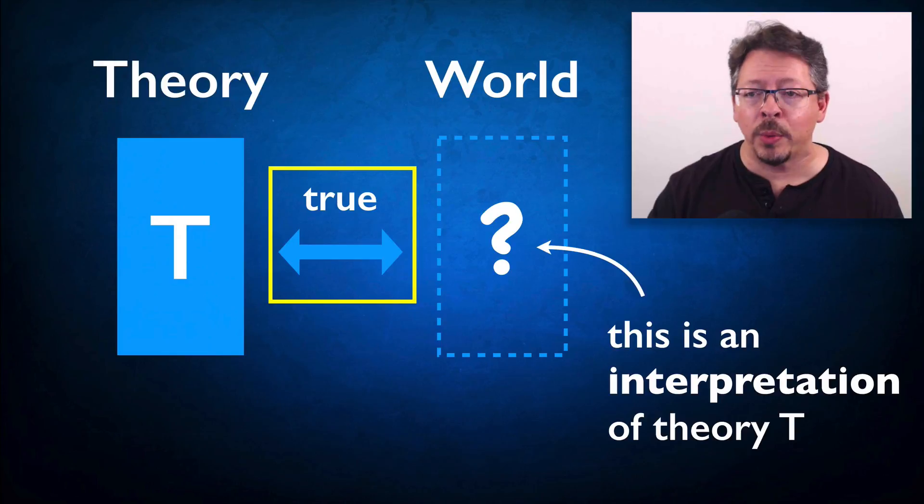First, we need to specify what we mean by a theory or model being true. This is also just a placeholder with a label. Intuitively, we think of this as a relation of correspondence of some kind. Assertions made by the theory correspond in some way to facts about the world.